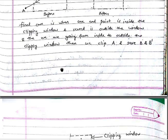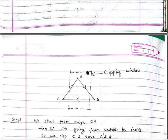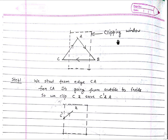Rule five: when both endpoints lie outside the clipping window, but the edge passes through the clipping window. This is the case we haven't mentioned yet, and I'm going to explain this rule through the example.